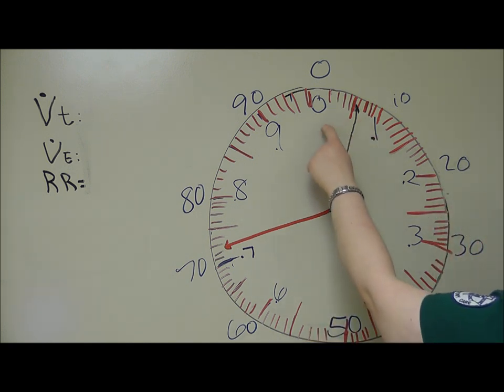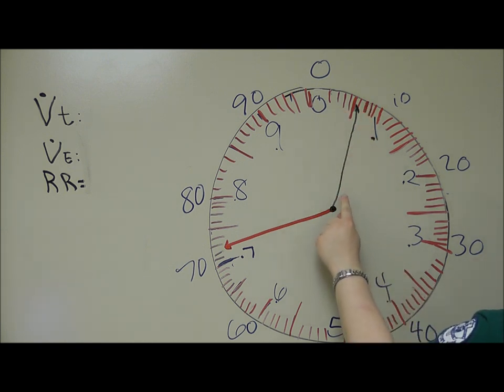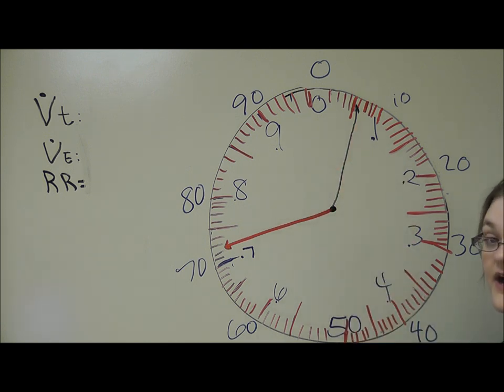So reading mine, we've got 1, 2, 3, 4, 5, 6. This hand has landed right between the 5 and 6 liters. Just like a regular clock, we're going to round the big hand back to the 5. So we're looking at 5 liters.